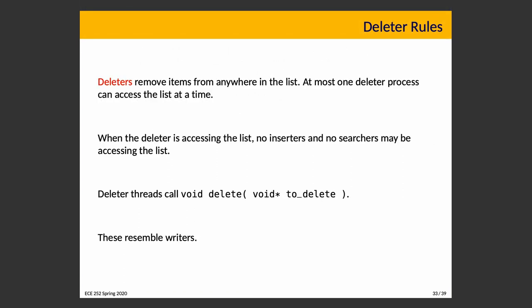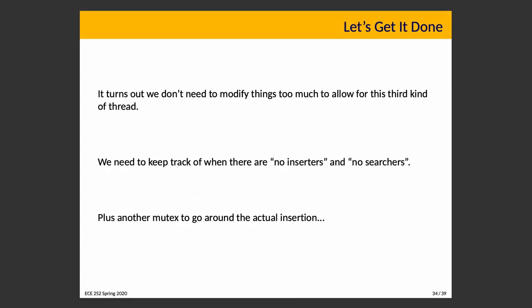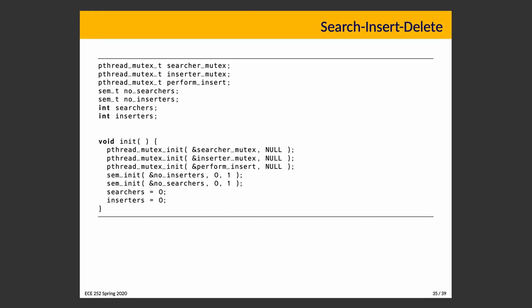Deleters remove items from within the list. At most one deleter process can access the list at a time, and when it does, nobody can be inserting and nobody can be searching. Deleter threads call delete with a void* argument for whatever they're looking to delete. The good news is we don't have to modify our solutions dramatically — we just have to keep track of when there are no inserters, and when there are no searchers. Those things matter to deleters mostly. We also need a mutex around the actual insertion, making sure no two threads try to insert at the same instant.